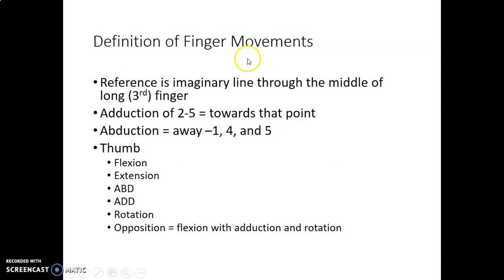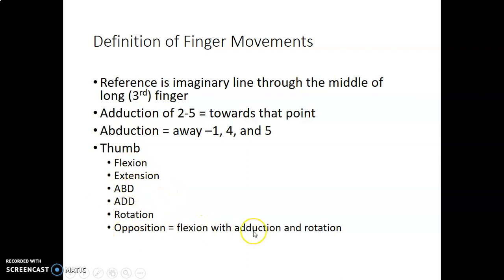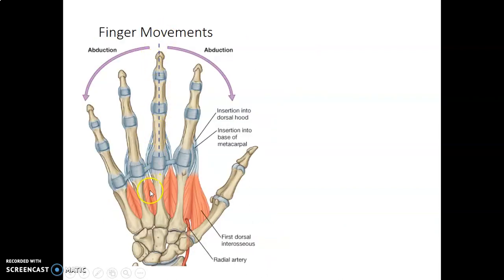When talking of movements that occur in the fingers, the reference is the third finger. Any movement towards the third finger is adduction; away from the third finger is abduction. The thumb has numerous movements because of the mobility of the first metacarpal joint: flexion, extension, abduction, rotation and opposition.